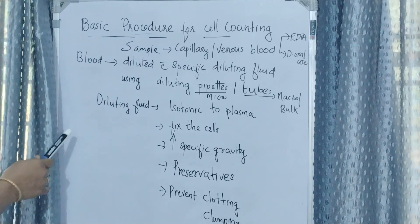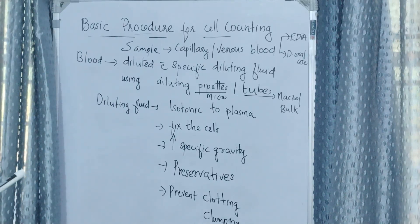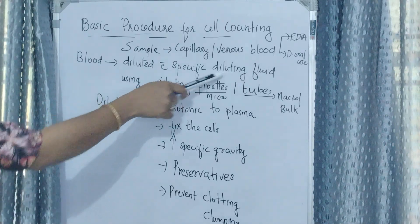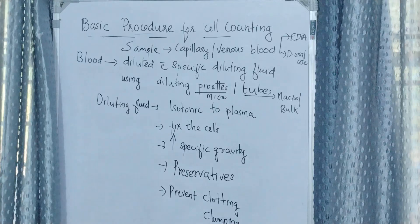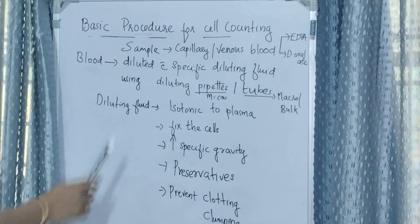The blood is diluted with specific diluting fluid to facilitate counting under microscope. There are specific diluting fluids for RBC, WBC, platelet, and eosinophil count.